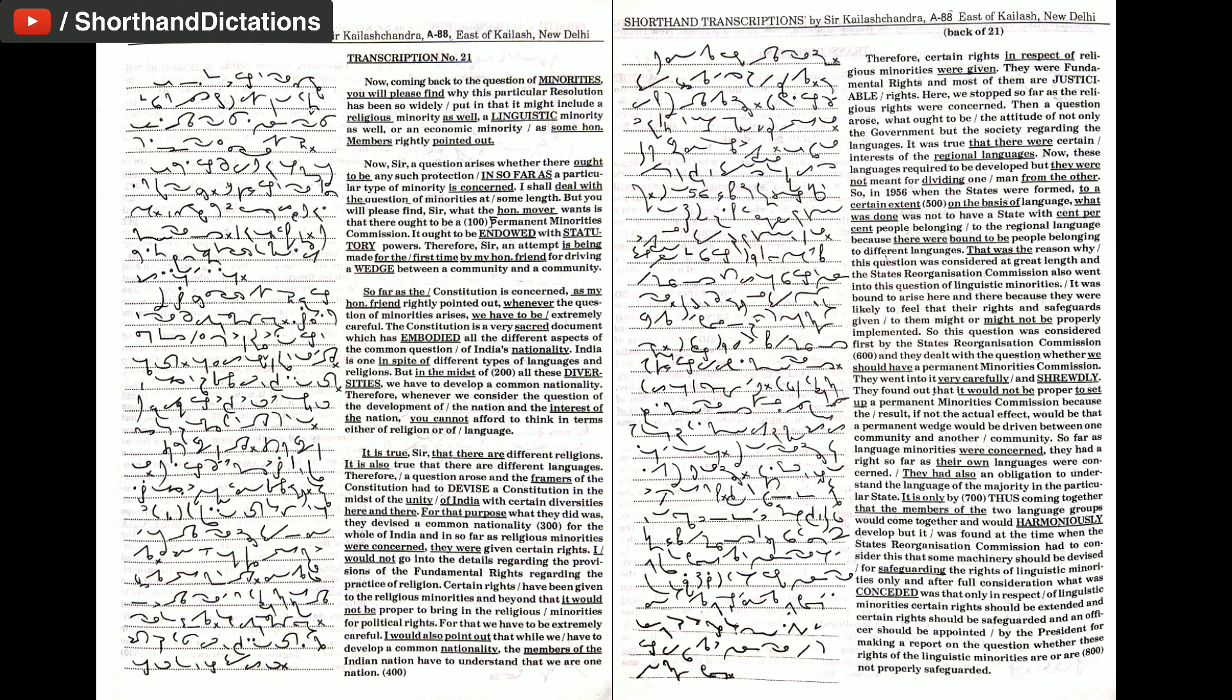For that purpose, what they did was, they devised a common nationality for the whole of India and insofar as religious minorities were concerned, they were given certain rights. I would not go into the details regarding the provisions of the fundamental rights regarding the practice of religion. Certain rights have been given to the religious minorities and beyond that, it would not be proper to bring in the religious minorities for political rights.